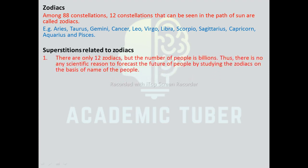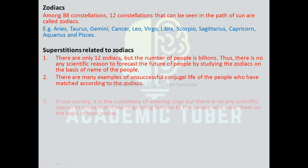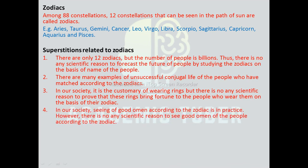Superstitions related to zodiac: there are only 12 zodiac signs but the number of people is billions, so there is no scientific reason to forecast the future of people by studying the zodiac based on their names. There are many examples of unsuccessful marriages of people matched according to zodiac in our society. It is customary to wear rings based on zodiac, but there is no scientific reason to prove that these rings bring good fortune. Similarly, seeing good or bad omens according to the zodiac has no scientific basis.